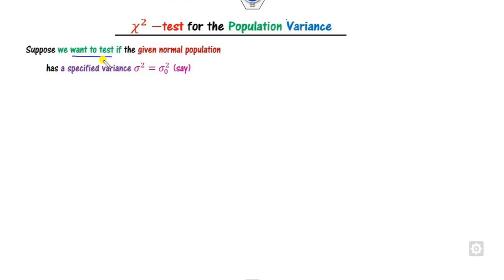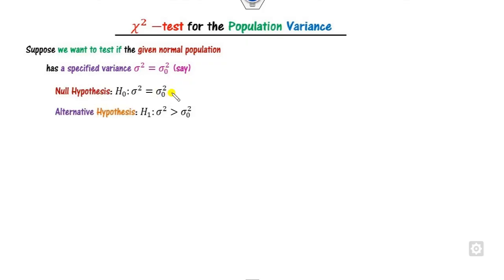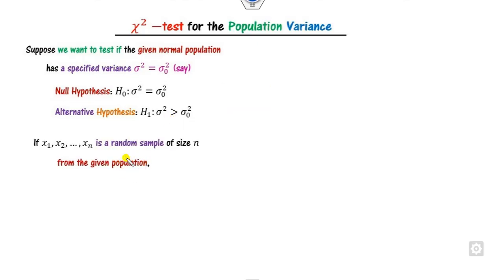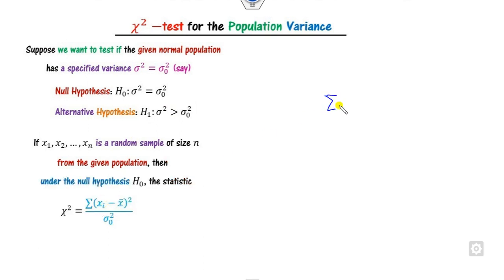Our target is to check whether the sample is taken from a normal population having specific variance σ₀² or not. We define the null hypothesis H0: σ² = σ₀² and alternative hypothesis H1: σ² > σ₀². The alternative is greater than because since it is a variance it is always a one-tail test. Also, σ² cannot be negative, so it can never be not-equal-to. The test statistic is χ² = (n-1)s²/σ₀², which follows the chi-square distribution with n-1 degrees of freedom.